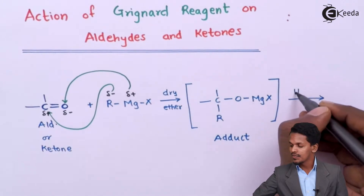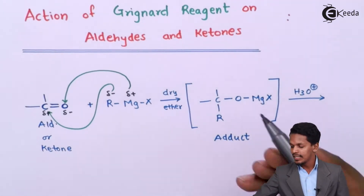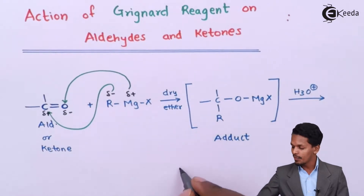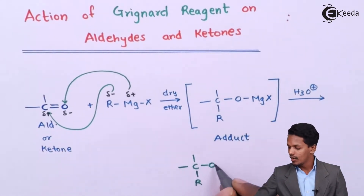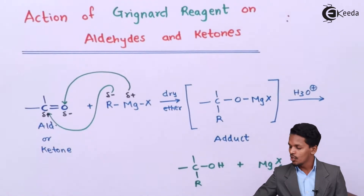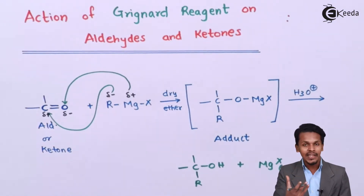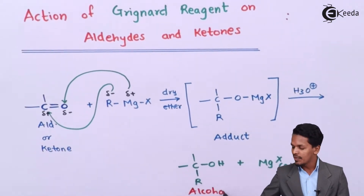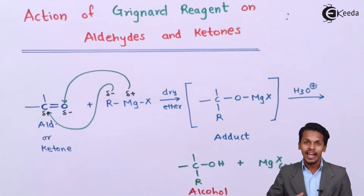On further hydrolysis in the presence of H3O+, the MgX group reacts with H3O+ to give the final product: a carbon bearing the new R group and an OH group, while MgX·OH is formed as a byproduct. This is how an alcohol is formed when an aldehyde or ketone reacts with a Grignard reagent.